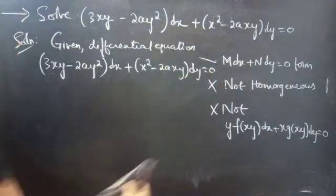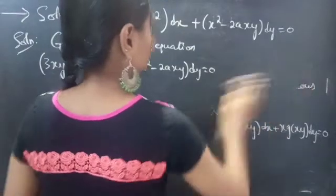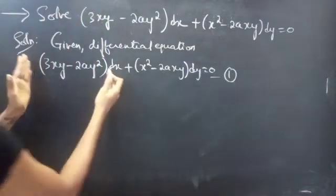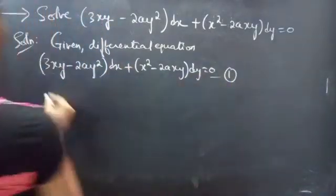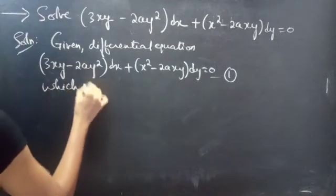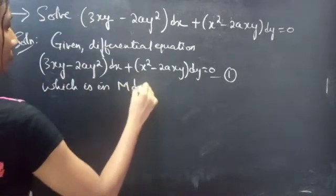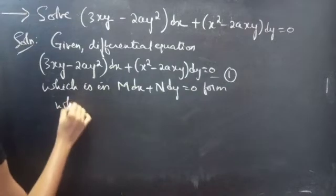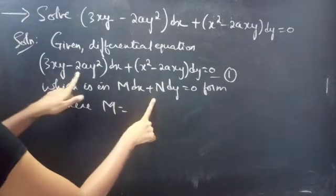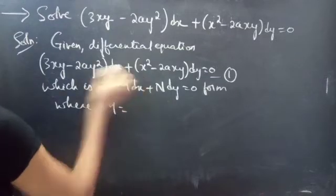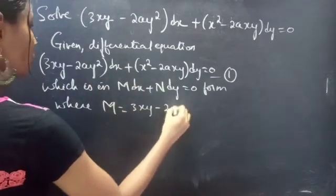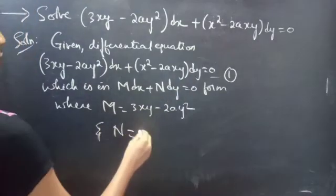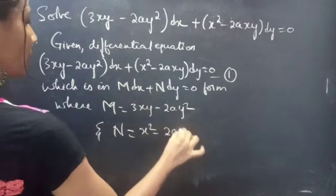Consider the given differential equation as equation 1, which is in M dx plus N dy equals to 0 form. By comparing, we get M equals to 3xy minus 2ay² and N equals to x² minus 2axy.